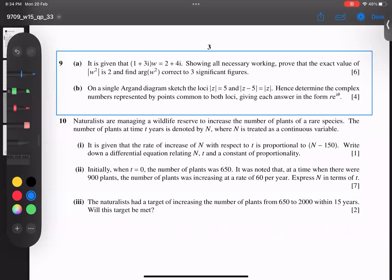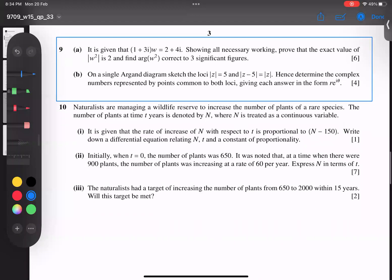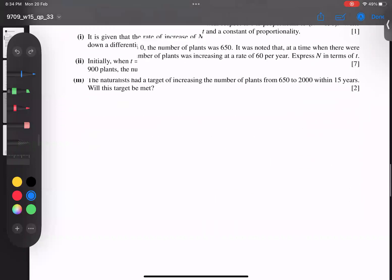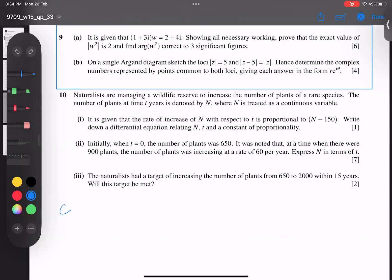This is question number 9 from October 15, 33 variant on complex numbers. First we have to solve part A. We have (1 + 3i)w = 2 + 4i, so we divide the right side and use rationalization, multiplying up and down with the conjugate of the denominator.